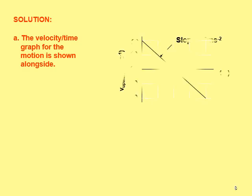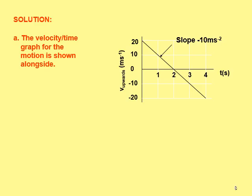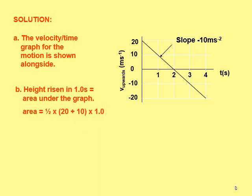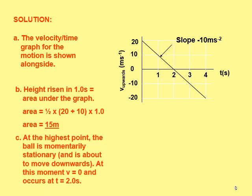Welcome back. First, the velocity-time graph for the motion. Notice that the slope is now negative — it starts with an upward velocity of 20 m/s, but as it goes up it decelerates due to the force of gravity acting on the basketball. The slope is now negative, not positive — this is important. The height in one second equals the area under the graph: half times (20 + 10) times 1 from the graph, giving 15 meters in one second.